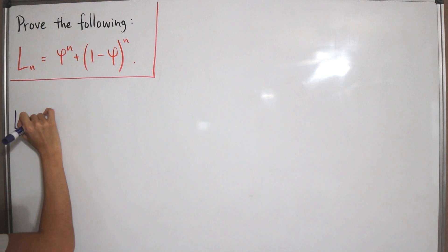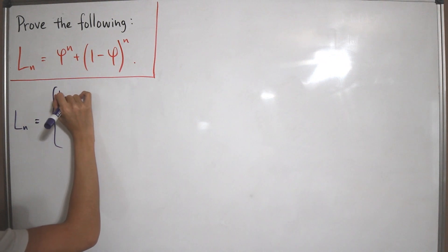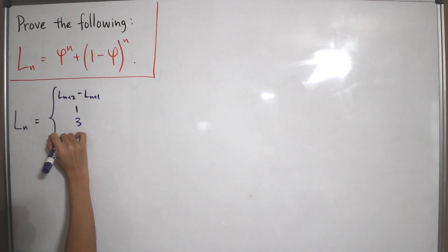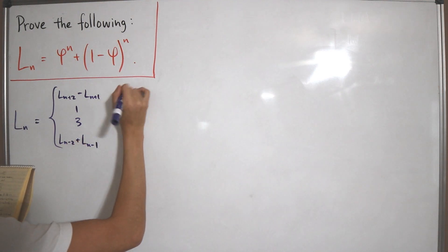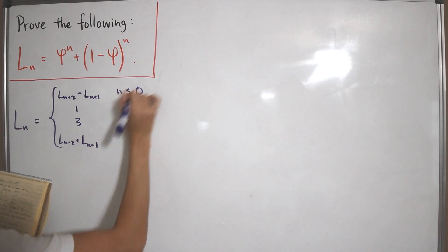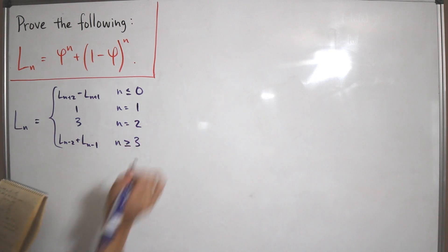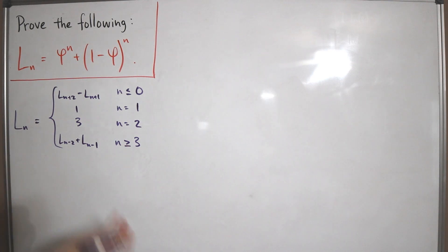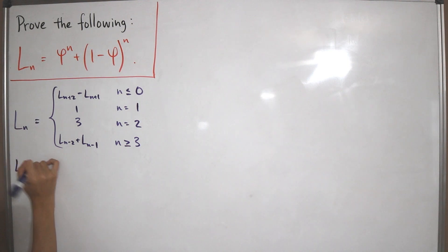The definition of a Lucas number has four conditions: L_2 = 2, the recurrence L_{n+2} = L_{n+2} - L_{n+1}, L_1 = 1, L_2 = 3, and for n greater than or equal to 3: L_n = L_{n-2} + L_{n-1}. This lets us build up more Lucas numbers and find the identity we need to prove.